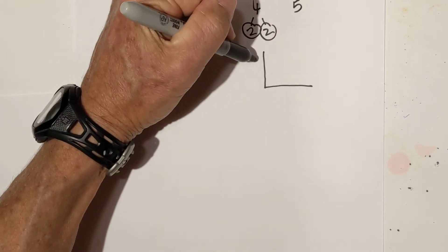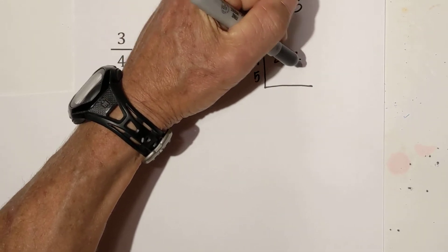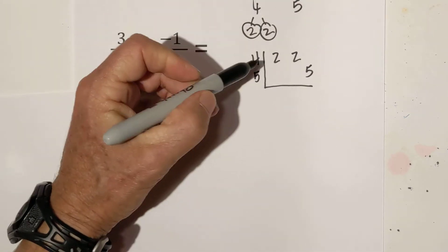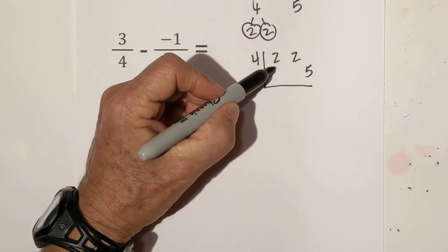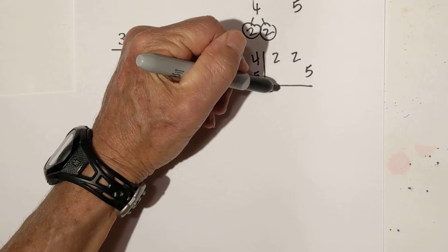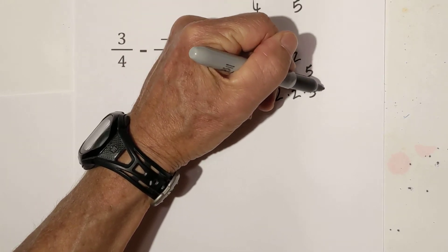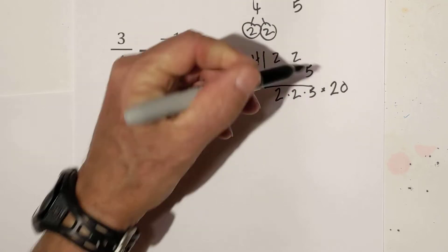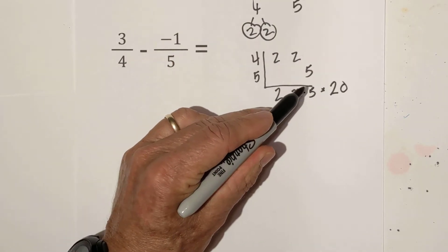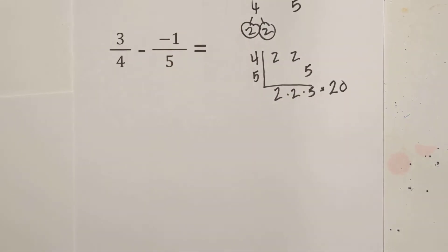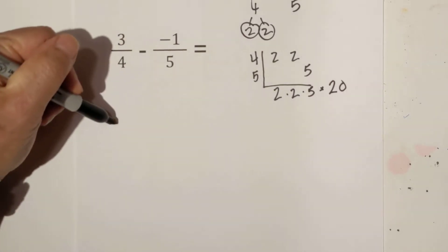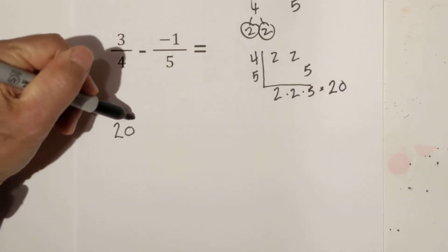I put them in a chart and what you do is you bring down the numbers. If you had more than one in a column you would only bring down one so we have 2 and 5 and then you just multiply all this together and that equals 20 because 2 times 2 is 4 and 4 times 5 is 20. Now we can use 20 as our denominator.